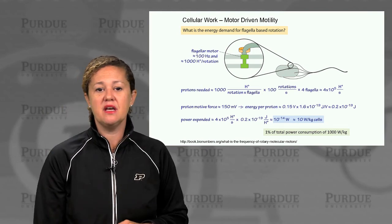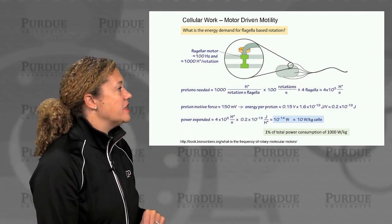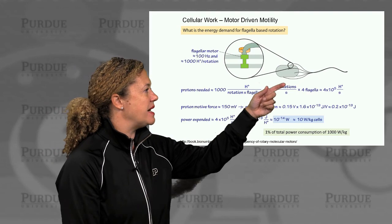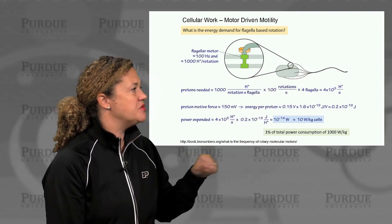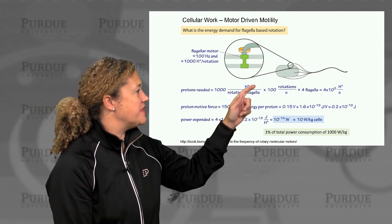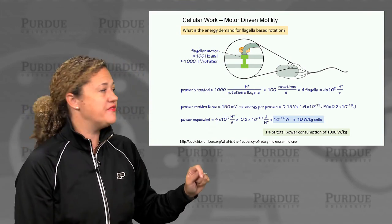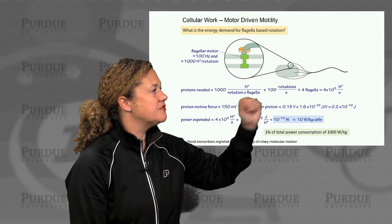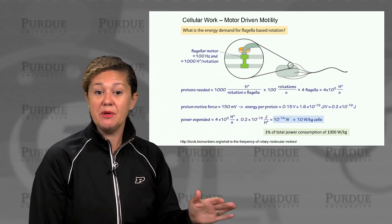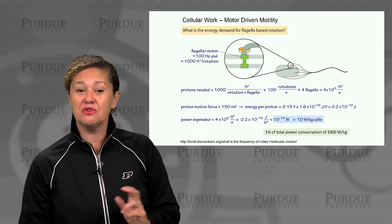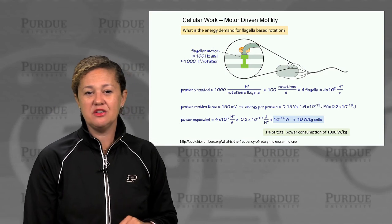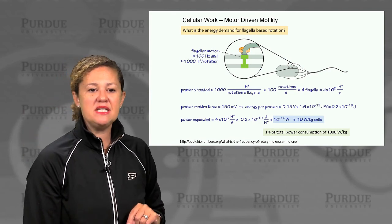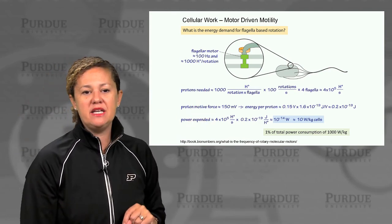Let's look at another form of cellular motility. Bacteria, for example, will often move or swim using flagella. Here's a cartoon of a bacterium with flagella, and there's actually a motor that facilitates their rotation — a flagellar motor that rotates and moves these flagella so the bacteria can swim. It can also use this rotation to control direction, which is an interesting control and gene expression system. Let's look at some calculations from measurements on these flagellar motors.